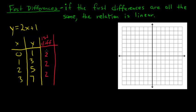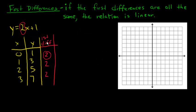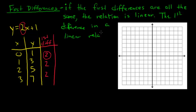You may notice that the first difference is 2, which also happens to be the coefficient of x — which you also know, in the form y equals mx plus b, as the slope. So the second important thing about first differences is that the first difference is actually the slope. You can find the slope this way as well.